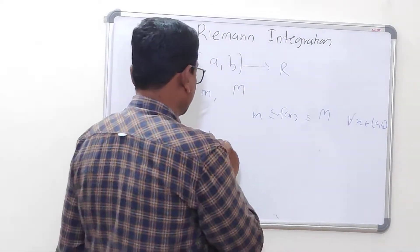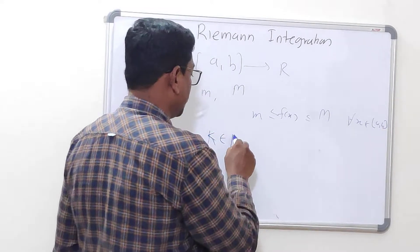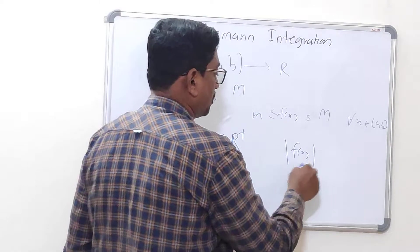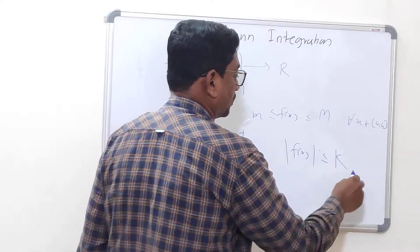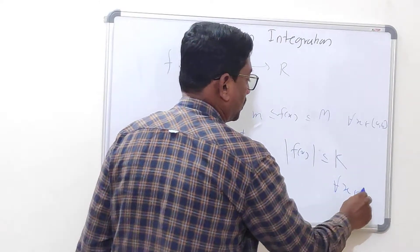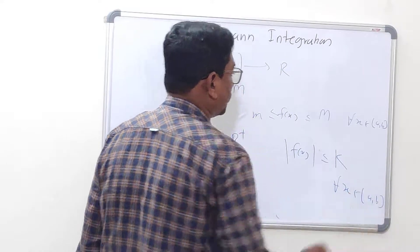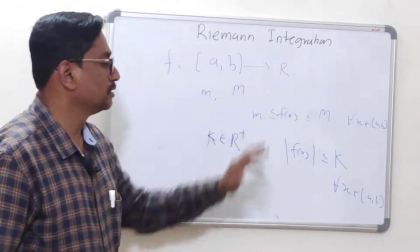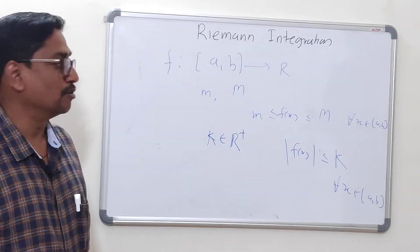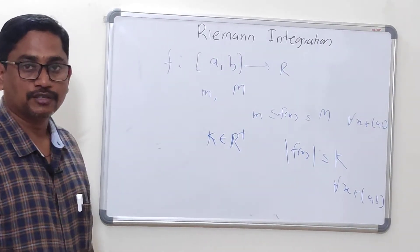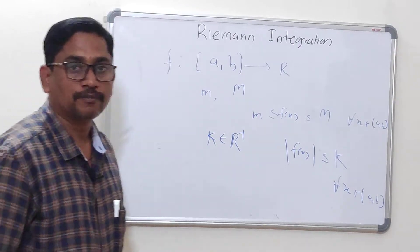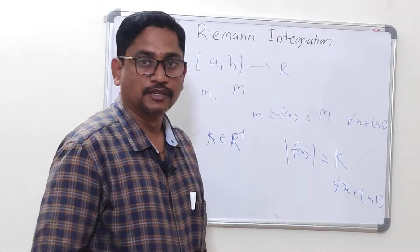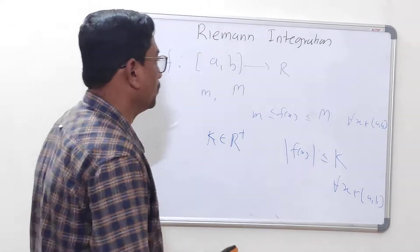An alternate definition: for a positive real number k, the modulus of f(x) is always less than or equal to k for whatever x you take from the closed interval [a, b]. Such functions are called bounded, and if their codomain is the set of real numbers they are called real-valued functions. So whatever functions you assume for studying Riemann integration, the function should be bounded and real-valued.